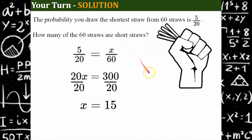So fifteen of the sixty straws are short straws. That makes sense: fifteen out of sixty simplifies to five out of twenty, which simplifies further to one in four. So we have a one in four, or a twenty-five percent chance of drawing a short straw.